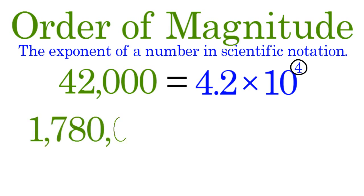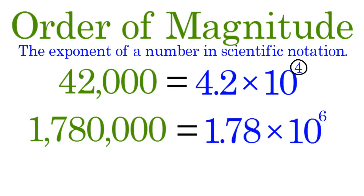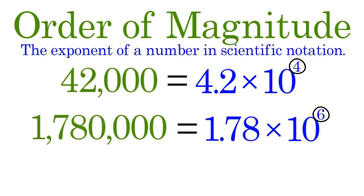Similarly, 1,780,000 in scientific notation is 1.78 times 10 to the sixth power, so its order of magnitude is 6.